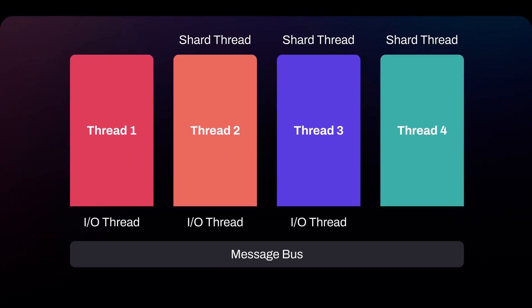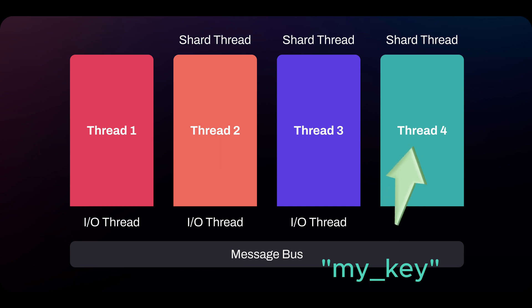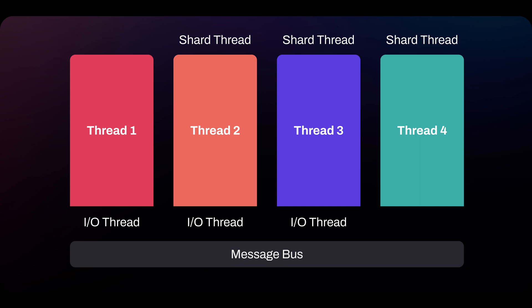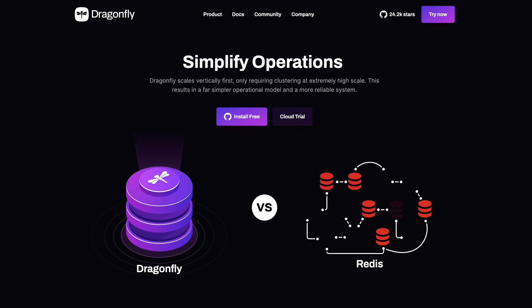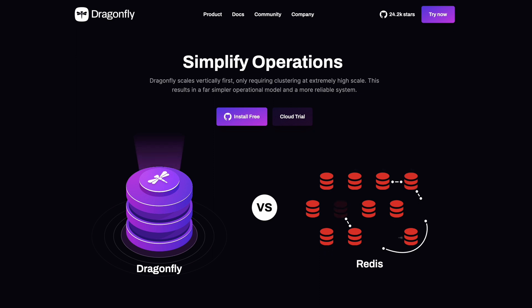The existing Redis client libraries can be used seamlessly with Dragonfly as well. Now let's talk about the multi-threaded and shared-nothing architecture. Dragonfly is multi-threaded, but each key is managed by one and only one thread. This ensures efficiency and performance. On top of that, we also have a lightweight transactional framework to ensure atomicity. This architecture allows Dragonfly to fully utilize multi-core servers and handle high workloads and complex operations smoothly.